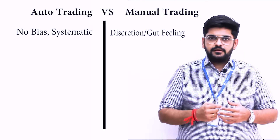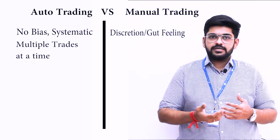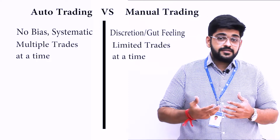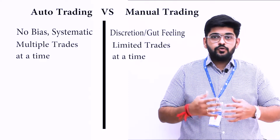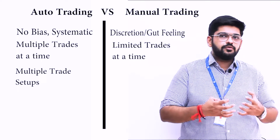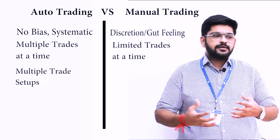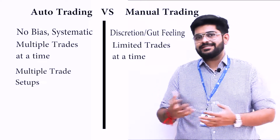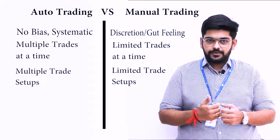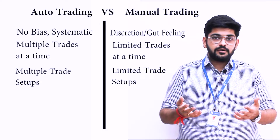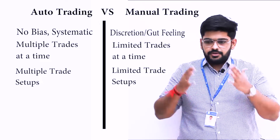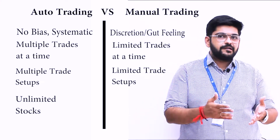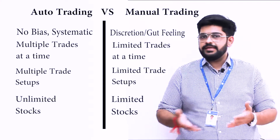Secondly is speed. A system can trade many, many times in one second whereas a human being cannot. The third difference is customizability — you can customize a machine to read many different layers of data, price points, and factors, whereas a human being can only consume a limited amount. And the fourth and most important is scalability. A machine can scan an unlimited number of stocks to find a perfect trading opportunity, whereas a human being cannot.